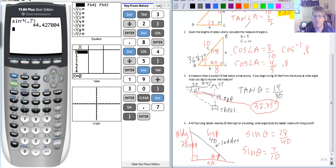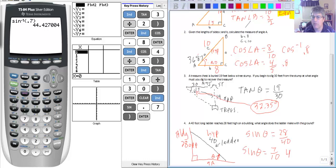And I get 44.43 degrees. So 44.43 degrees. And there are some sample problems for calculating the angles using our trig functions. And we will see you in class.